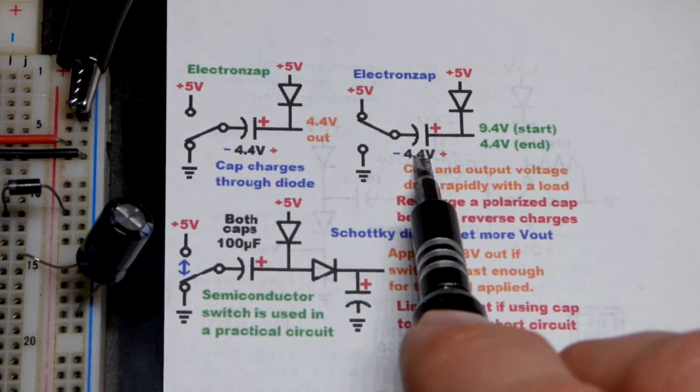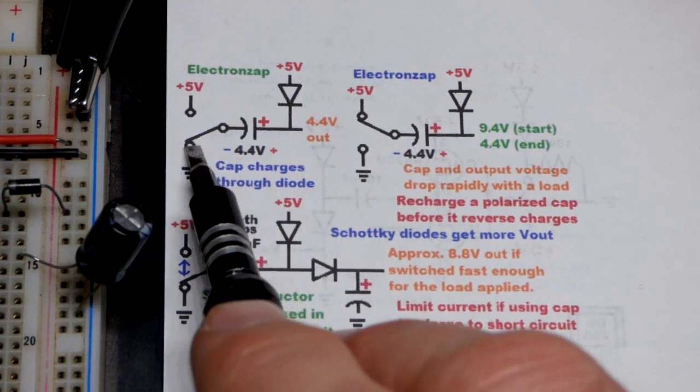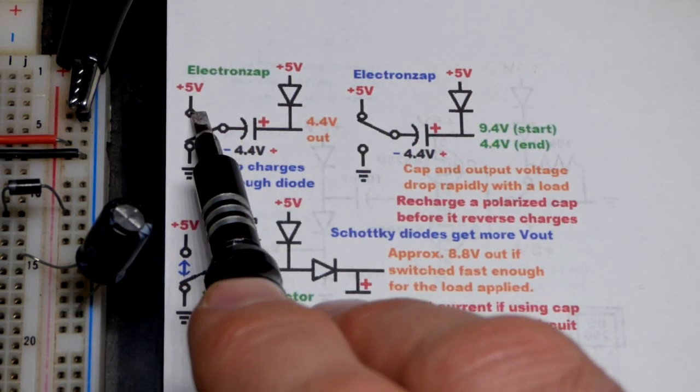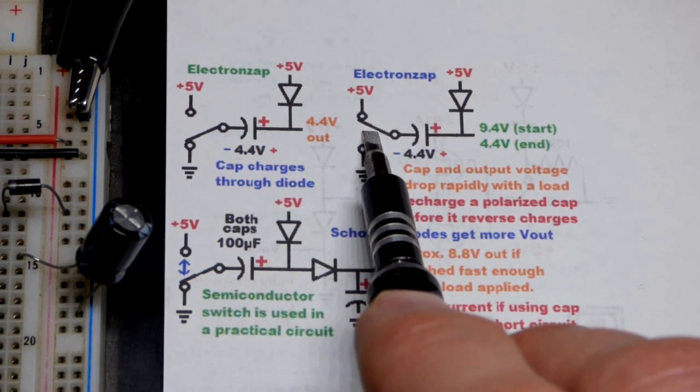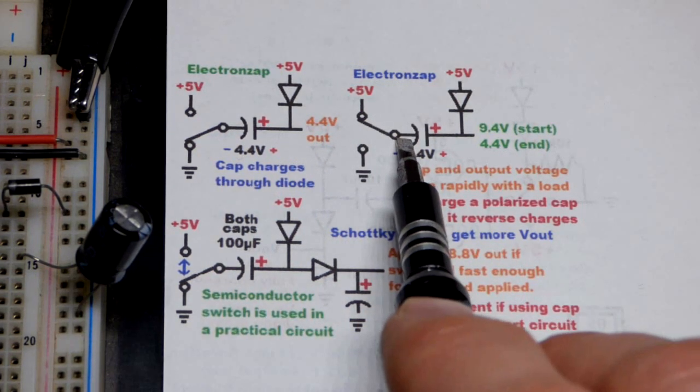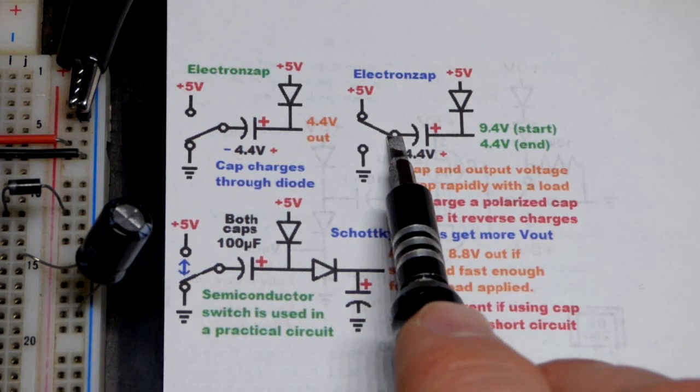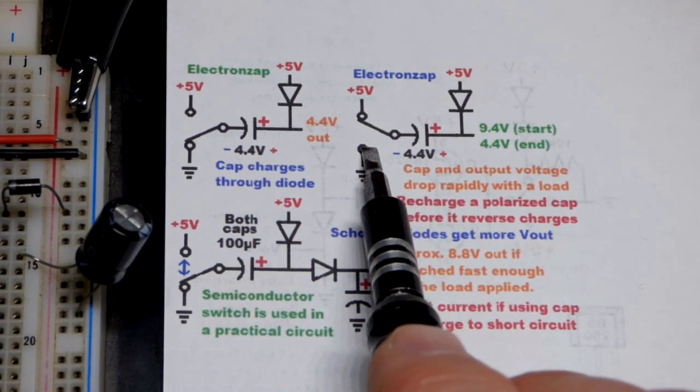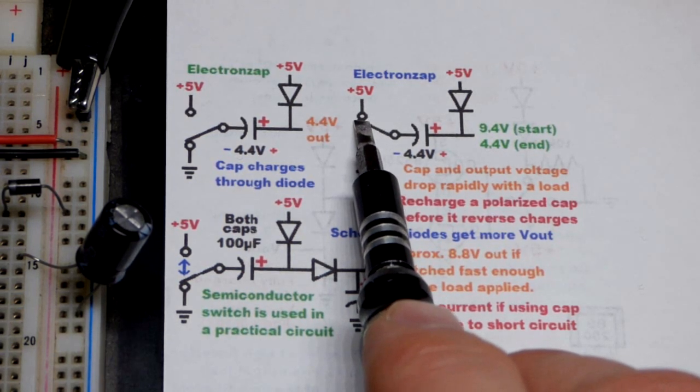When we move that jumper from the negative supply to the positive supply, of course you would use a digital switch or something, you won't manually keep doing this. A digital switch can go on all day, there's nothing to wear out, but for demonstration purposes the manual switch helps.